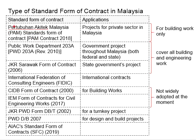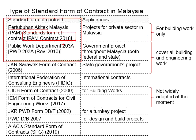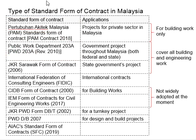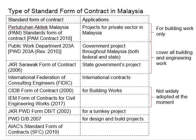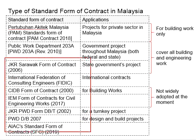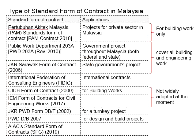The most commonly known standard forms of contract are the PAM contract and also the PWD contract. These two are the most popular standard forms of contract being used in Malaysia. Other than that, there are also quite a number of other standard forms of contract.